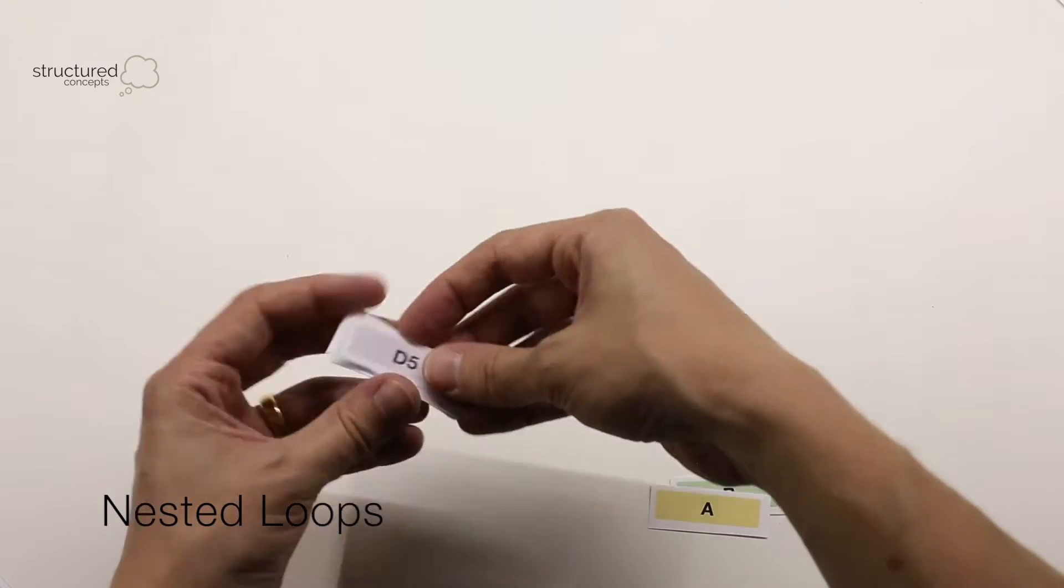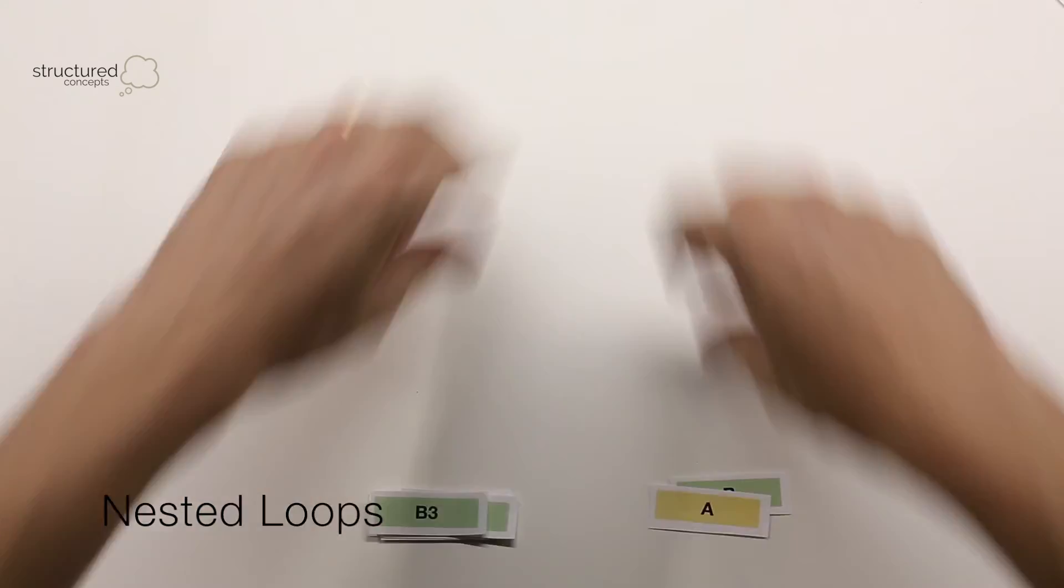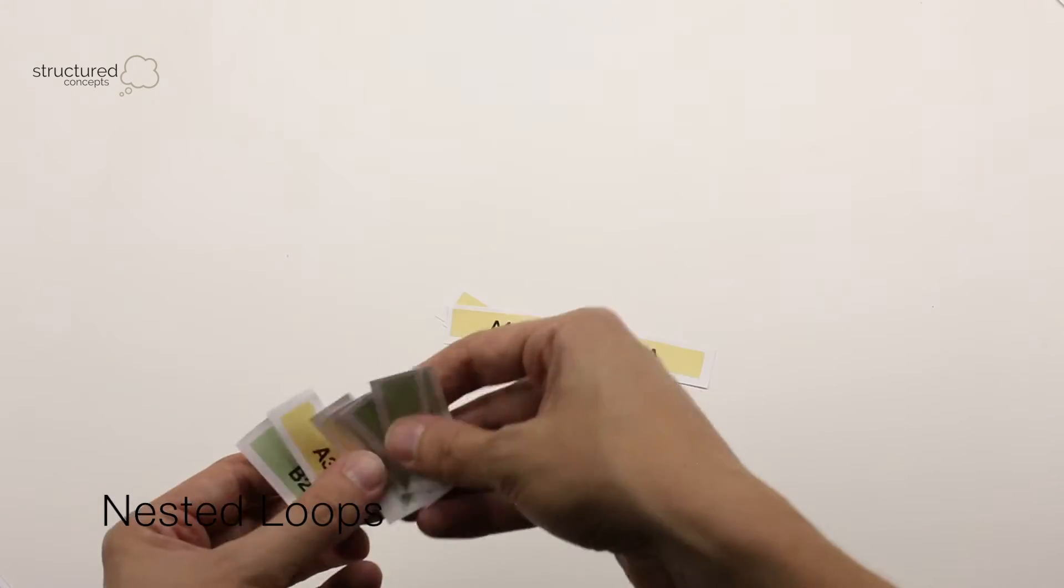In this example, that means going through all of the rows in the probe table for every row in the build table, and this is known as a scan, and it can be potentially very time consuming.